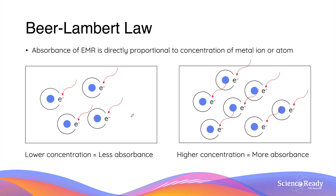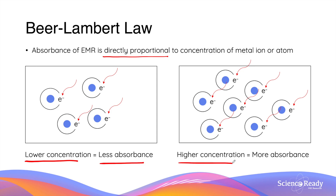The relationship between the amount of metal ion or atom present in a sample and the extent to which EMR is absorbed is described by Beer-Lambert law. Beer-Lambert law states that the absorption of EMR is directly proportional to the concentration of metal ions or atoms present in a given sample. Lower concentration means less absorbance; higher concentration means more absorbance. Thus, by measuring the amount of EMR that is absorbed, we can calculate the exact concentration of a particular metal ion.